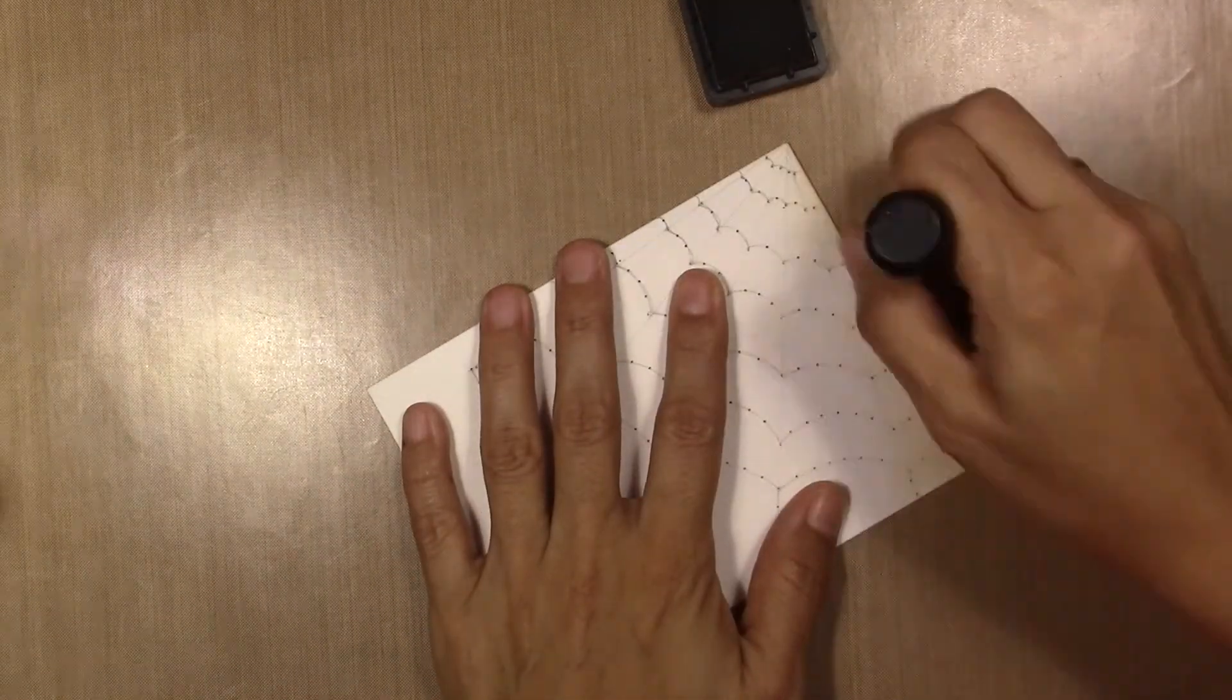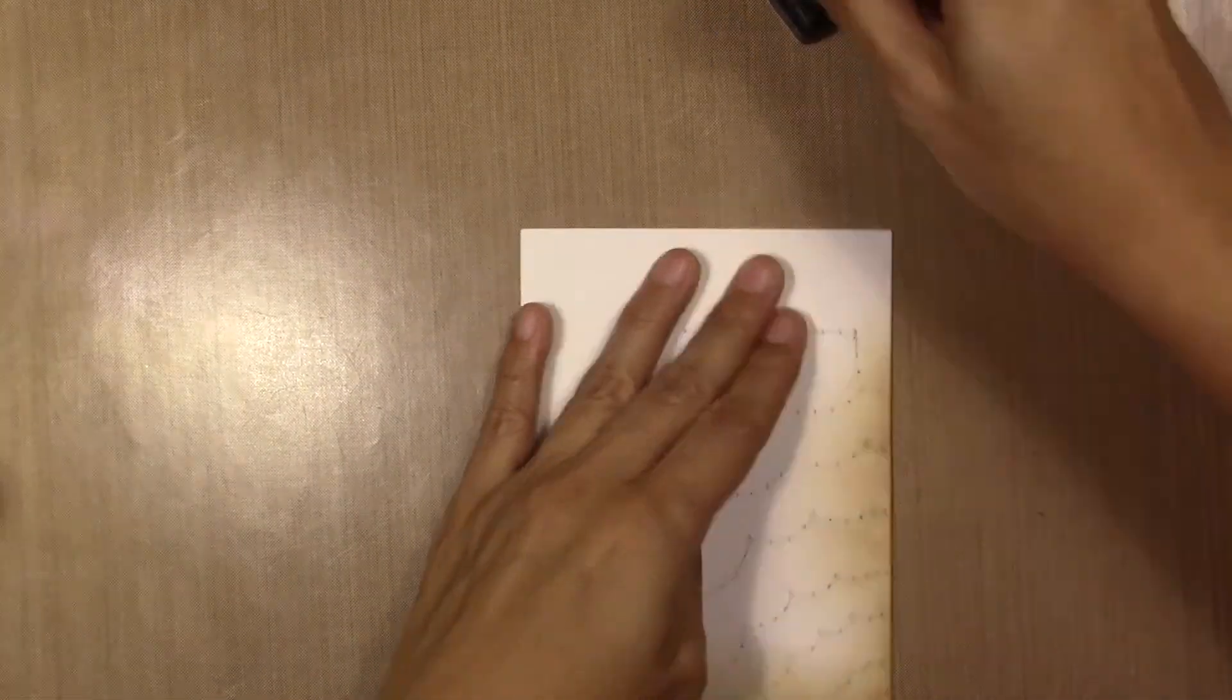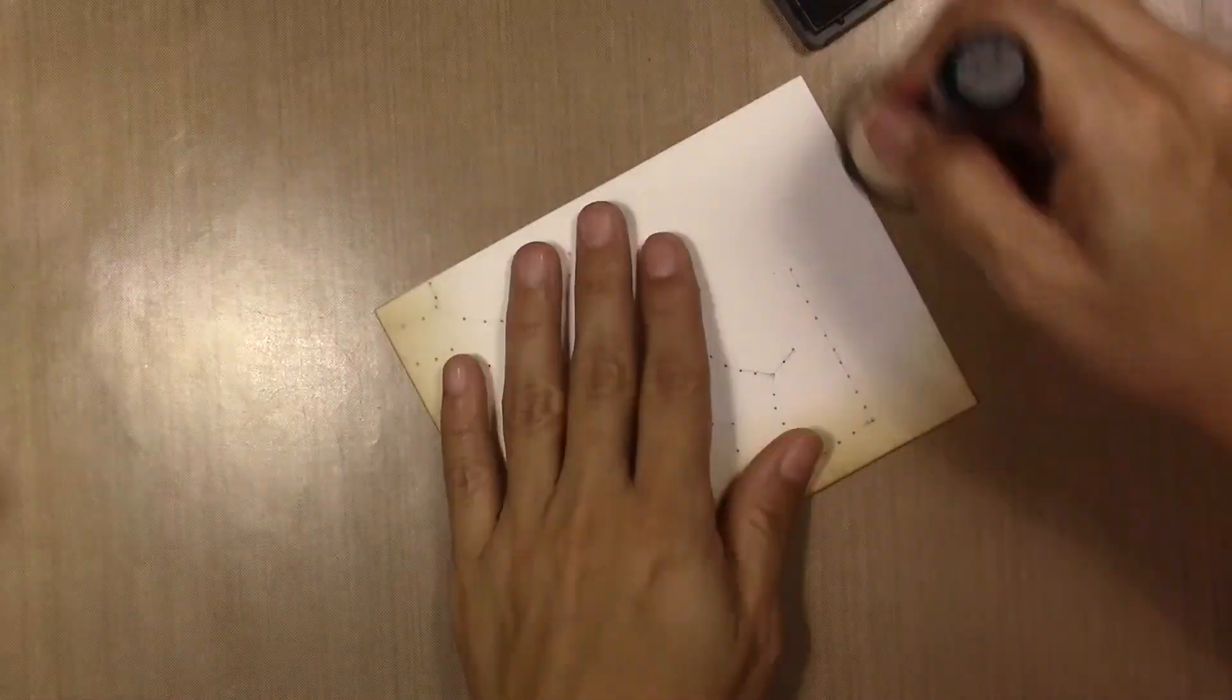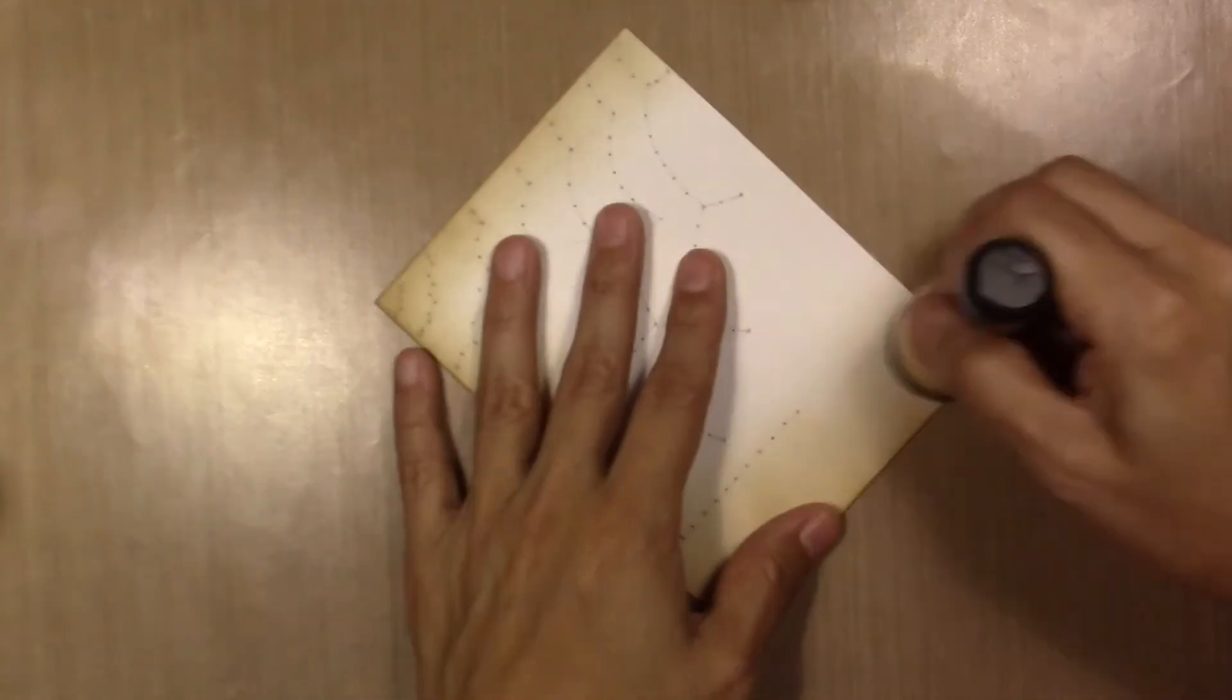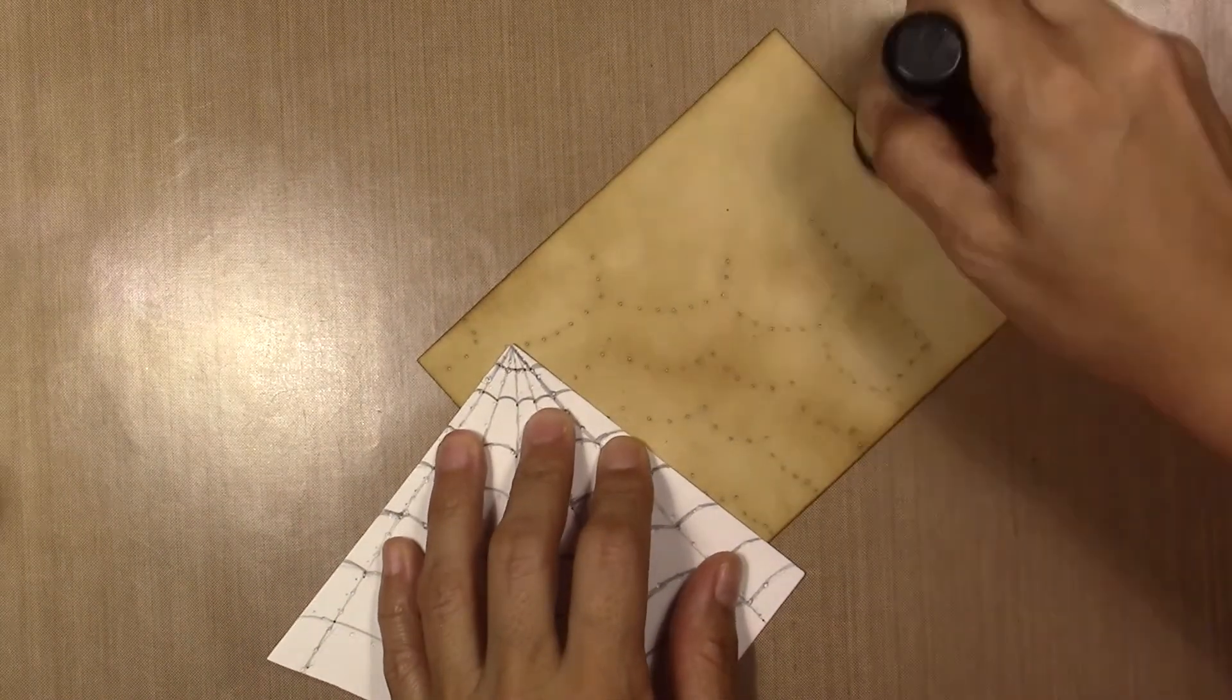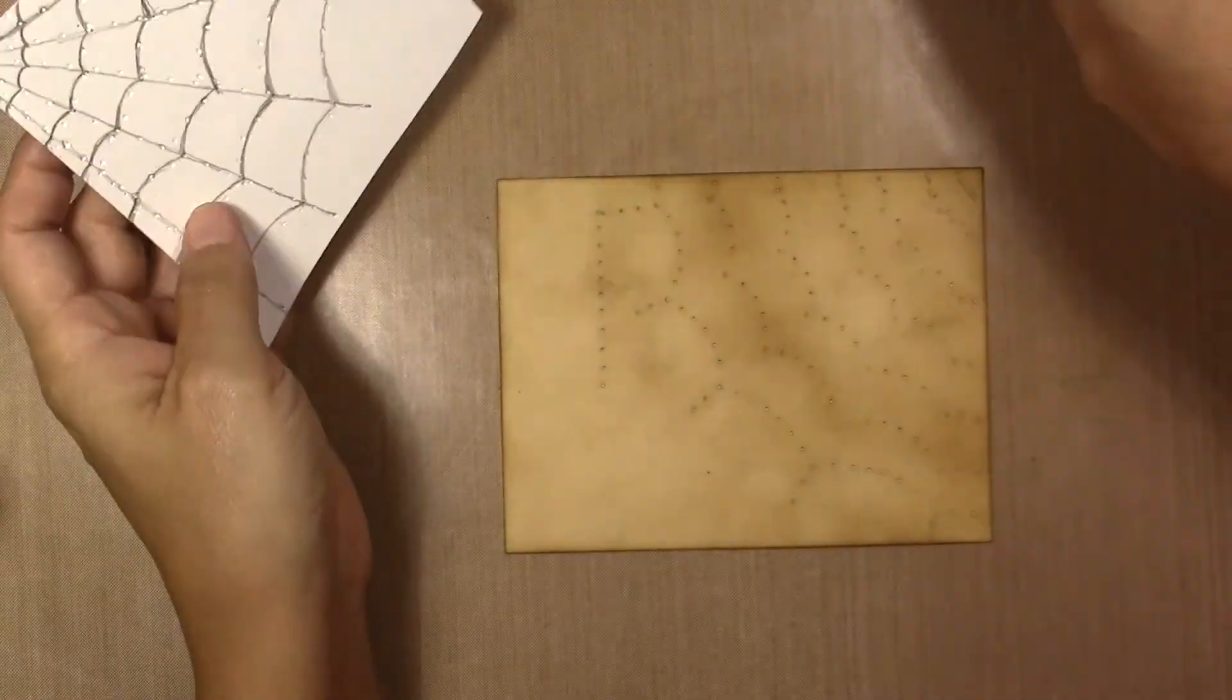When I finished making the little holes, I start distressing my paper with distress ink in Vintage Photo. I did the whole thing, I put lighter when I want lighter and darker when I want darker.